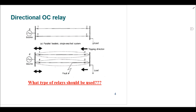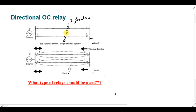Another example is when we have a load attached to a bus bar that is fed through two parallel feeders. In this case, a fault can occur in either line, and there is a possibility that both lines will trip if there is a fault in either one. So in this case as well we require directional relays. We will use directional overcurrent relays at the circuit breakers which will have bi-directional flow of power in case of a fault.